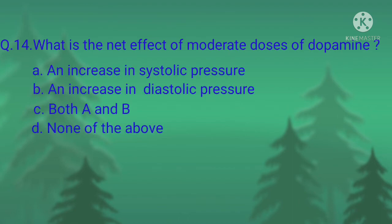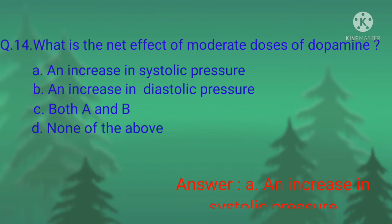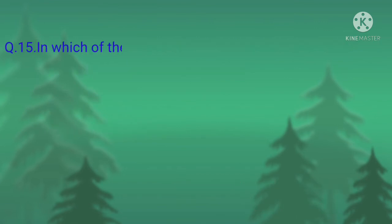Question number fourteen: what is the net effect of moderate doses of dopamine? Option A, an increase in systolic pressure; option B, an increase in diastolic pressure; option C, both A and B; option D, none of the above. The correct option is option A, an increase in systolic pressure.